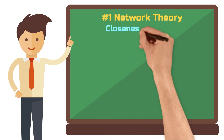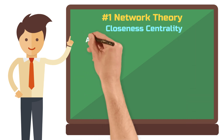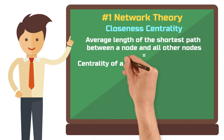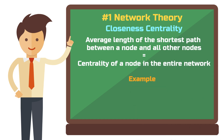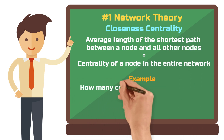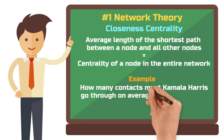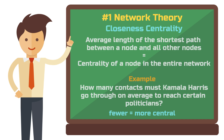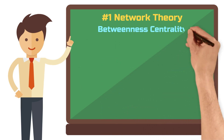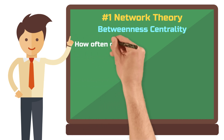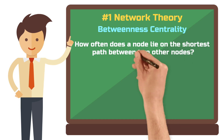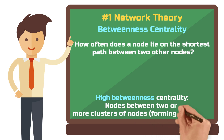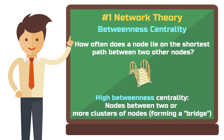The closeness centrality measure indicates the average length of the shortest path between a node and all other nodes. It shows how central a node is within the entire network. For example, how many contacts must Kamala Harris go through on average to reach certain politicians? The fewer, the more central she is in the network. Betweenness centrality indicates how often a node lies on the shortest path between two other nodes. Nodes with high betweenness centrality often lie between two or more clusters of nodes, essentially forming a bridge between them.